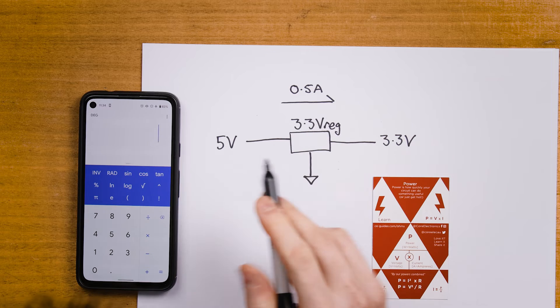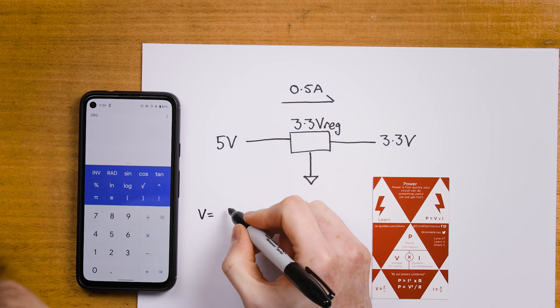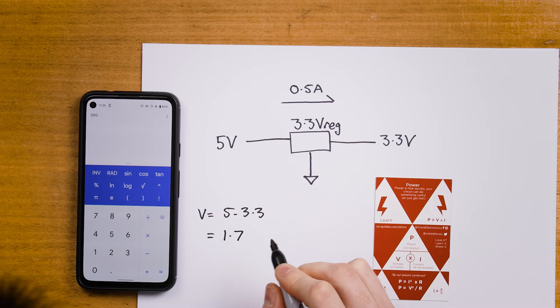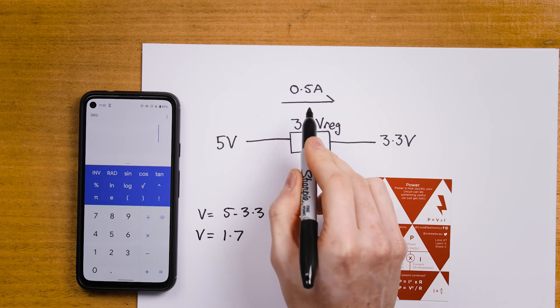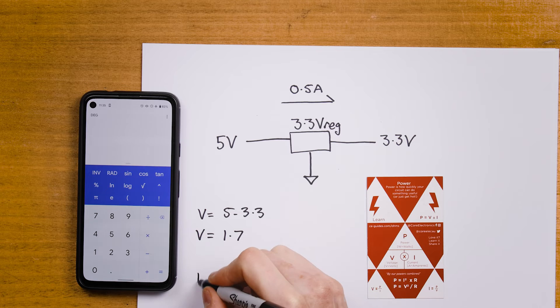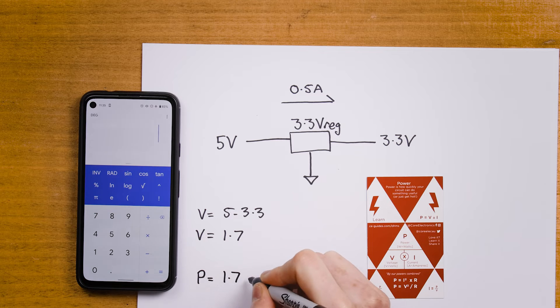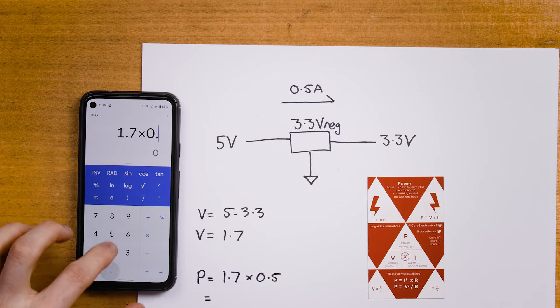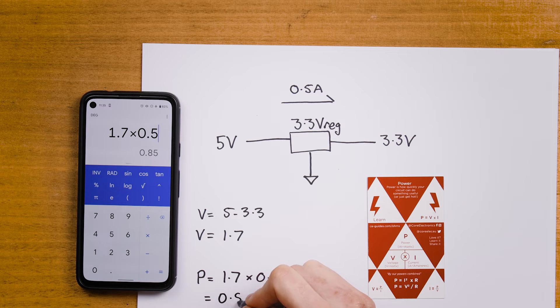If I have a 3.3 volt circuit drawing about half an amp through a 3.3 volt regulator from 5 volts, I can calculate the power dissipated by the regulator. I take the voltage difference: V equals 5 minus 3.3, so V equals 1.7 volts. I equals 0.5 amps. Power — cover up P — equals voltage times current: 1.7 times 0.5 equals 0.85 watts. So I would want to choose a voltage regulator that could handle at least 1 watt.